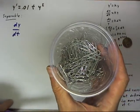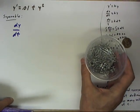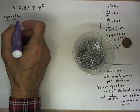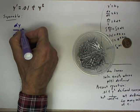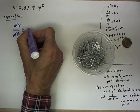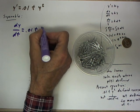y prime can be written, of course, dy dt, and it looks like we're blurring out. Let me see if I can recapture the focus here. Let's put this down here for the camera to focus on for a minute until we get something on the paper. Okay, dy dt then will equal .01ty squared.